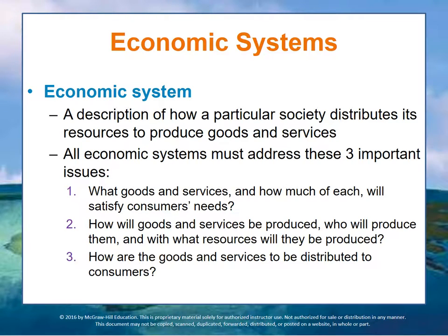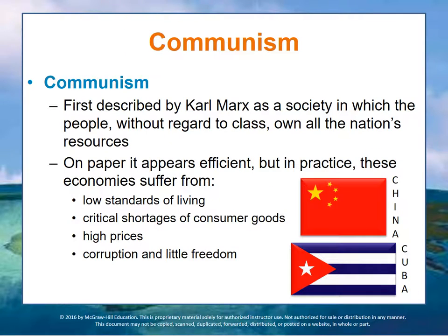Those are the three main questions an economic system answers. Let's look at these three types of economies one by one. Communism was first described by Karl Marx as a society in which the people, without regard to class, own all of the nation's resources.